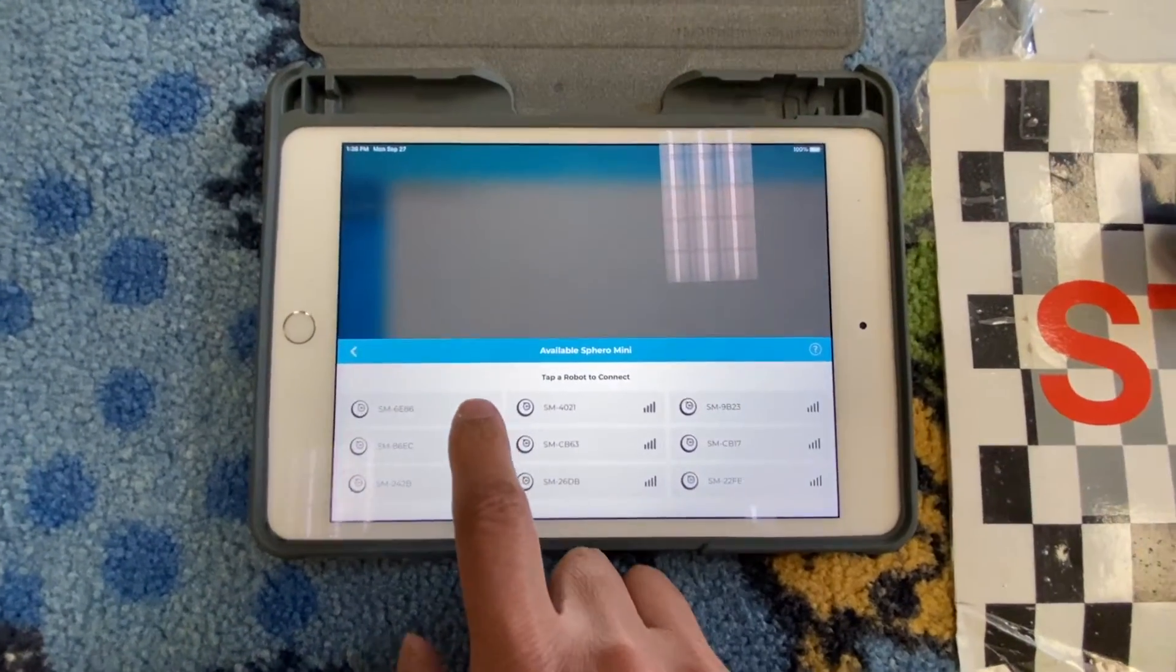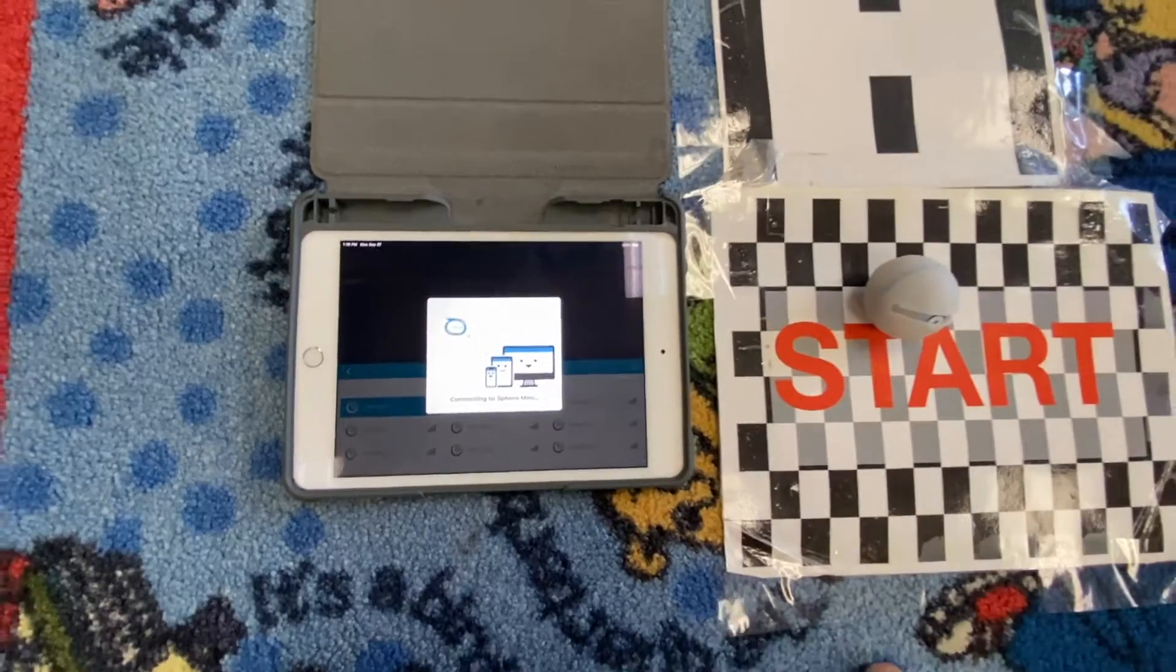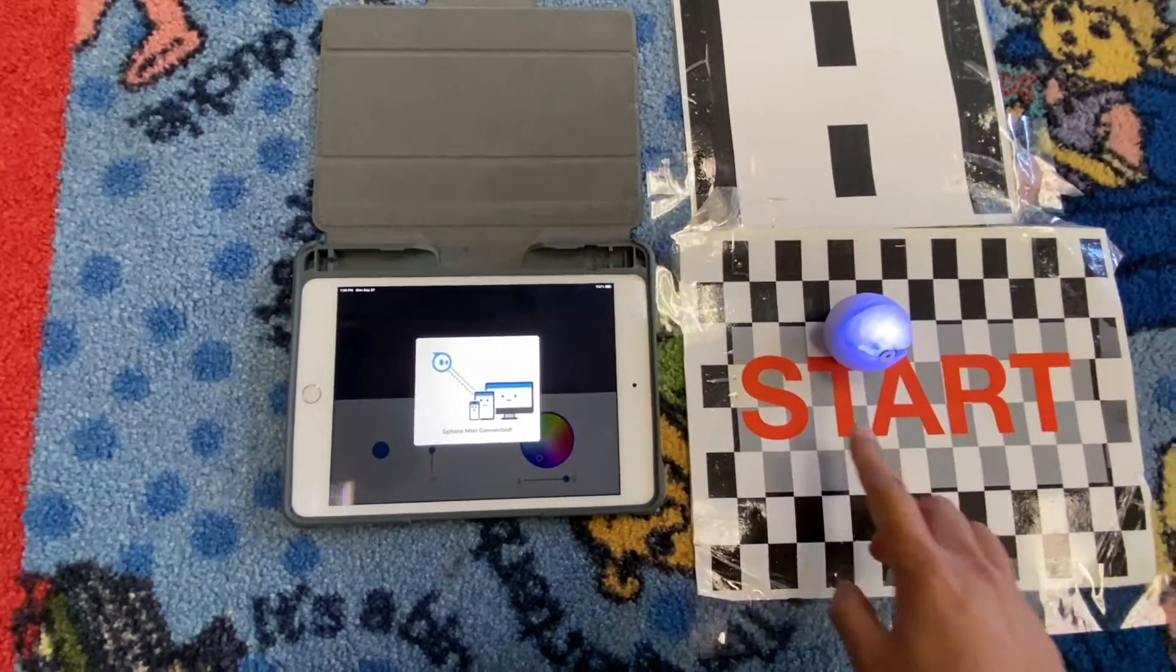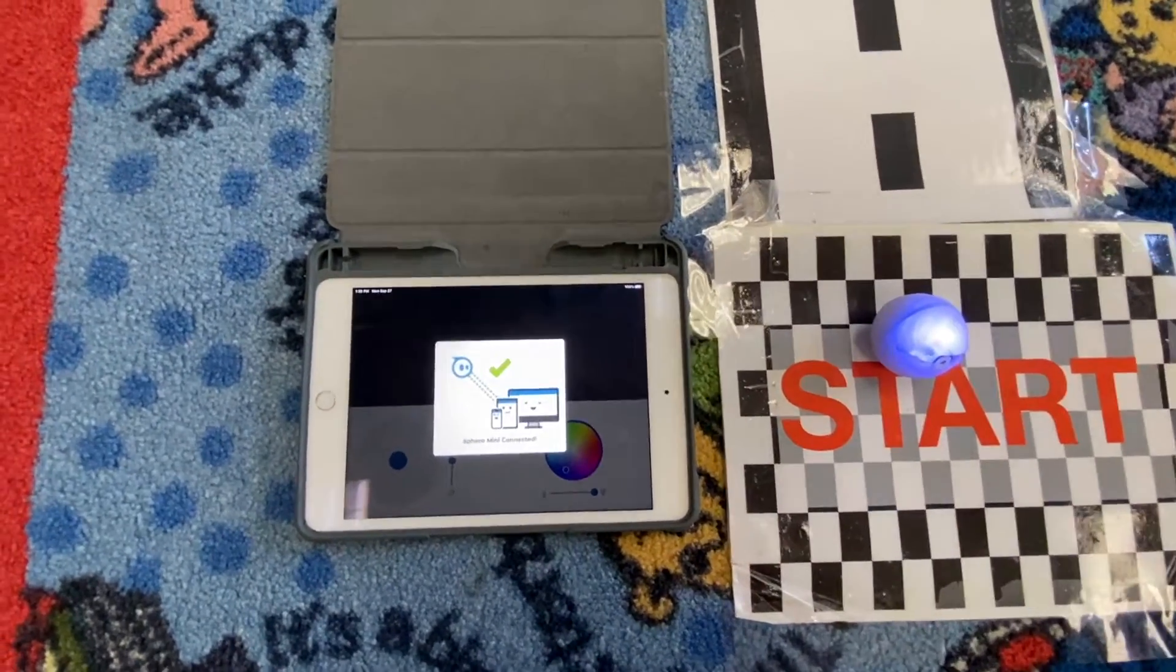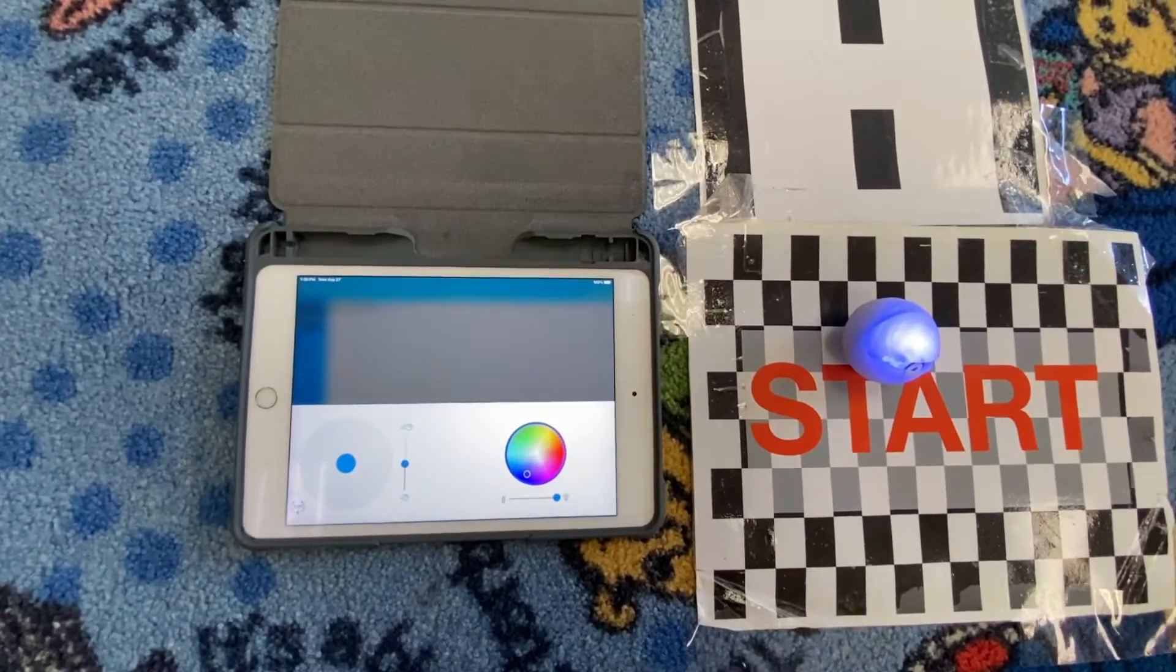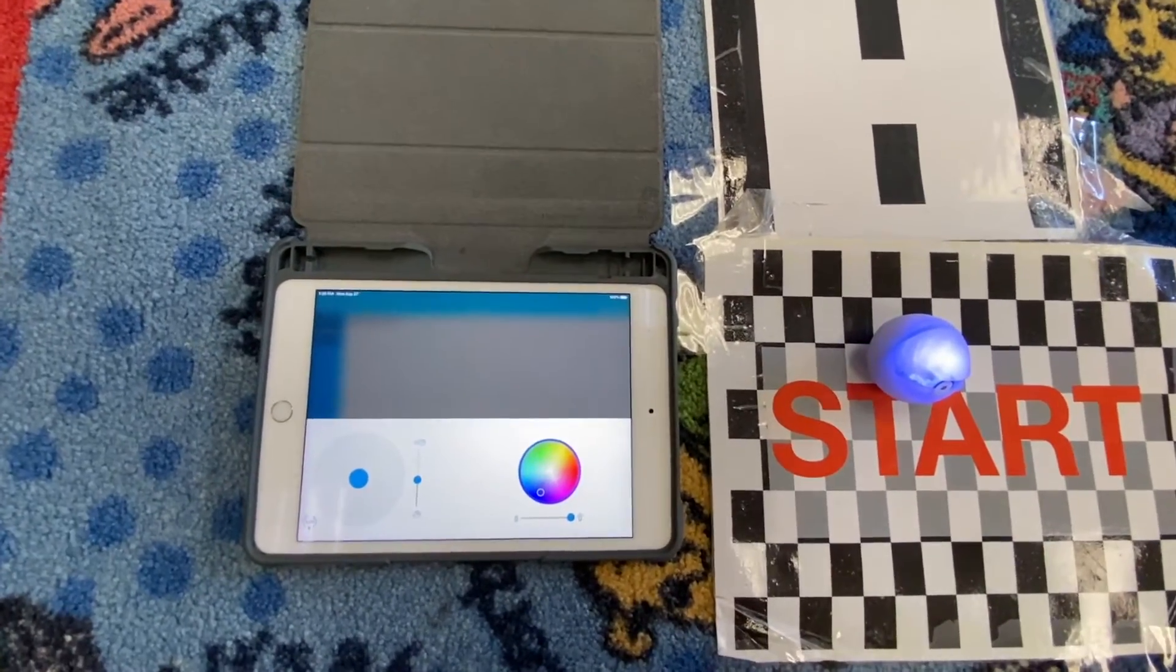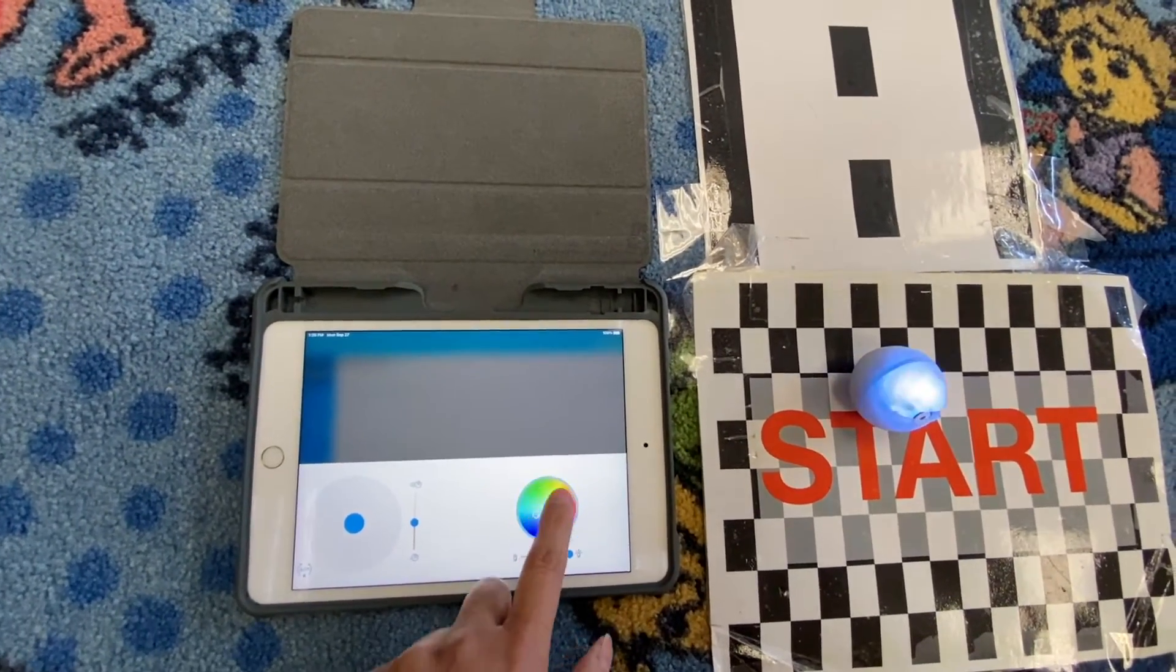So we're going to go ahead and select that first one and it's connecting to it. And see how it lit up? That means it showed that it connected. To confirm that it is your robot, you can go ahead and change the colors. That's how you know that that one's yours.